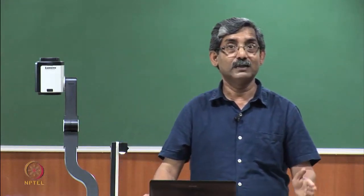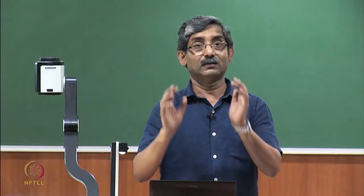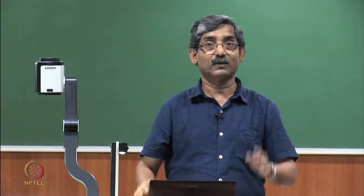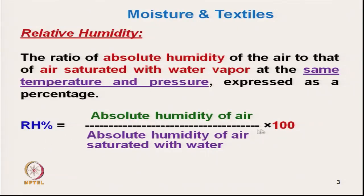Relative humidity is directly related with temperature and also pressure. With an increase in pressure, the vapor pressure or atmospheric pressure changes the capacity of holding moisture. So relative humidity is expressed as the ratio of absolute humidity of air at a particular temperature to the absolute humidity of saturated air, expressed as a percentage.